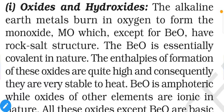Beryllium, being smaller in size, has comparatively less electropositivity, meaning it is more electronegative than other group members. So between beryllium and oxygen, we do not have enough electronegativity gap, and that's why they give more than 50% covalent character. That is why BeO is considered covalent in nature.